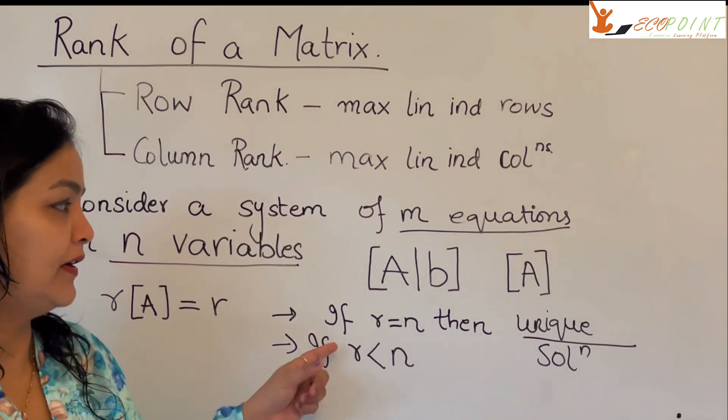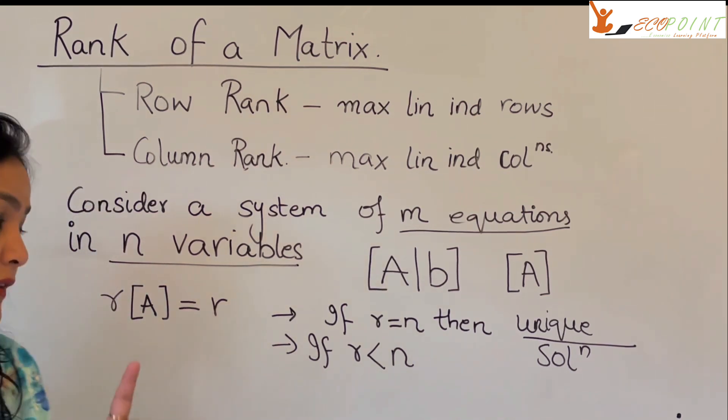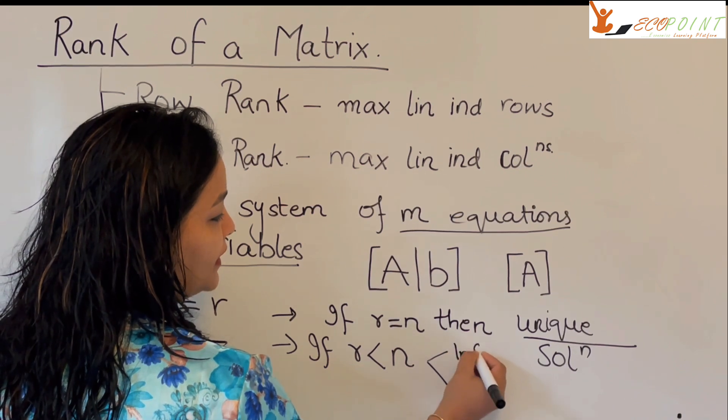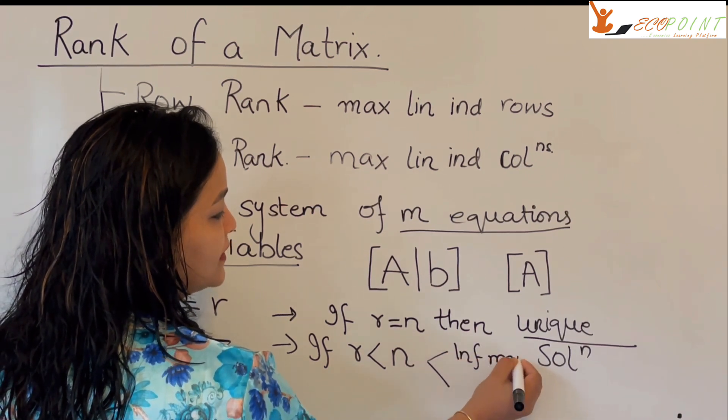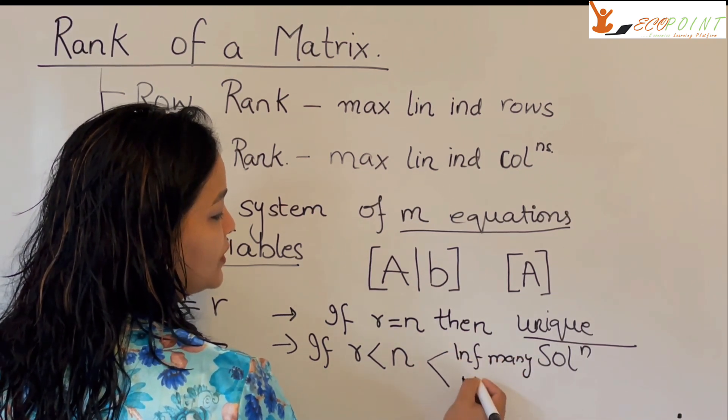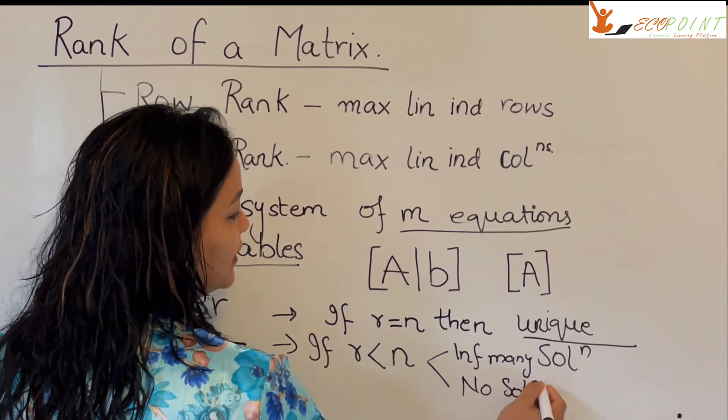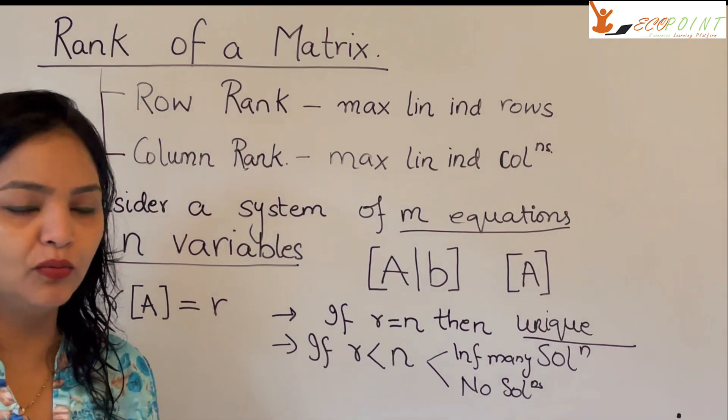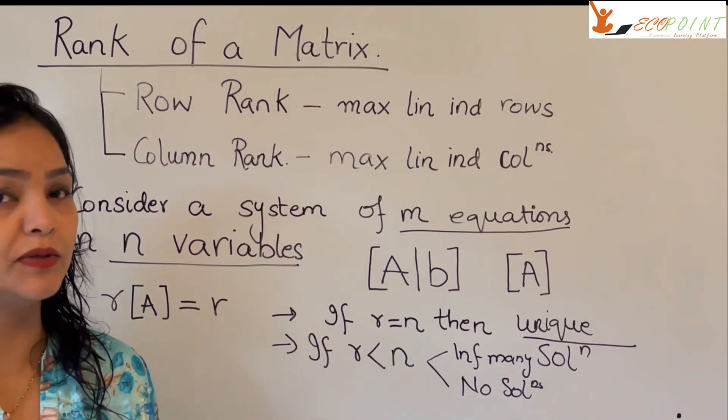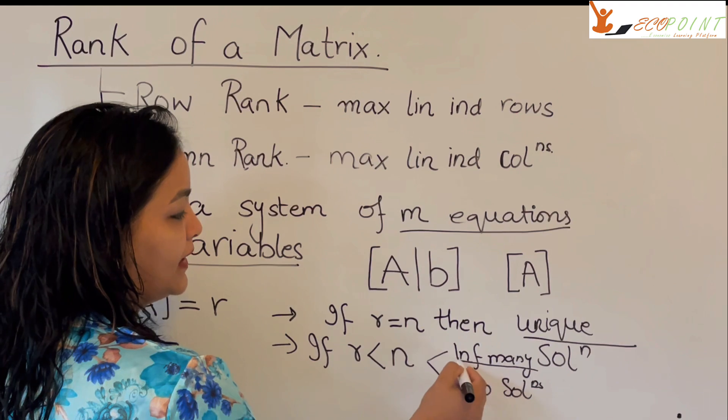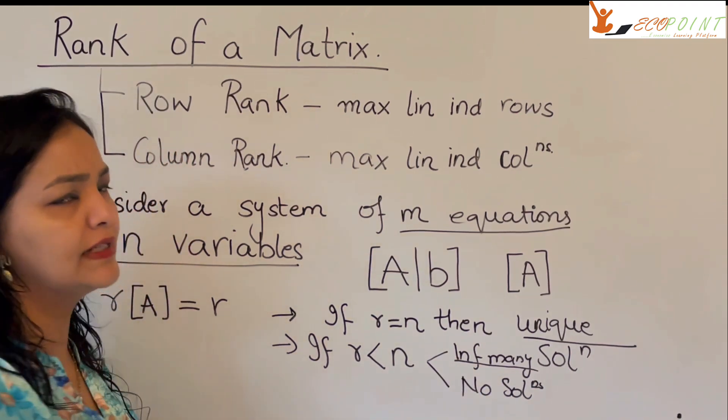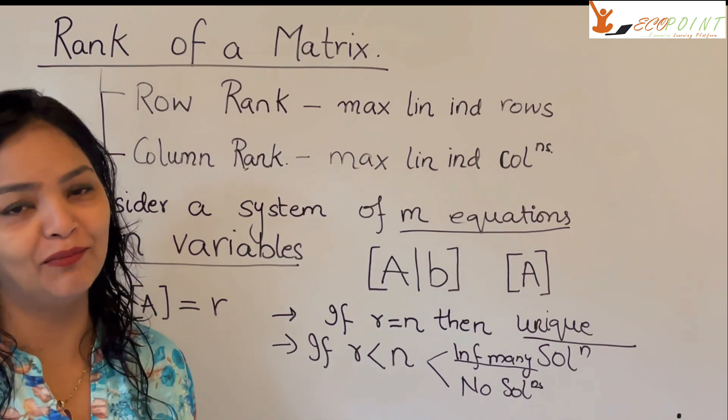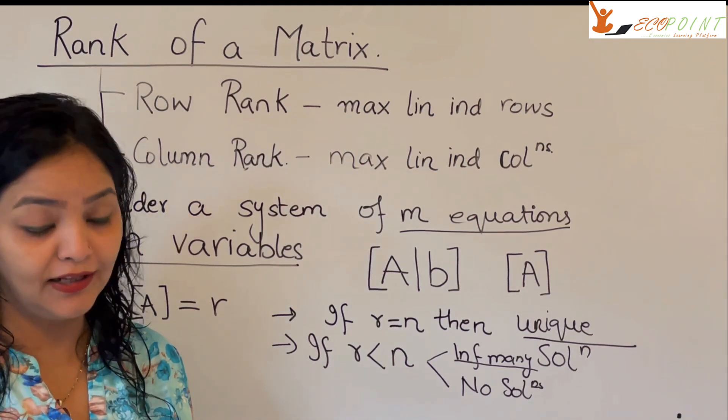On the other hand, if R, the rank, is less than n, there are two possibilities. There is a possibility of infinitely many solutions and there is a possibility of no solutions. If the system is consistent, then this will give you infinitely many solutions. If the system is inconsistent, then you will get no solution, which is something that I'm going to further talk about in the next video.